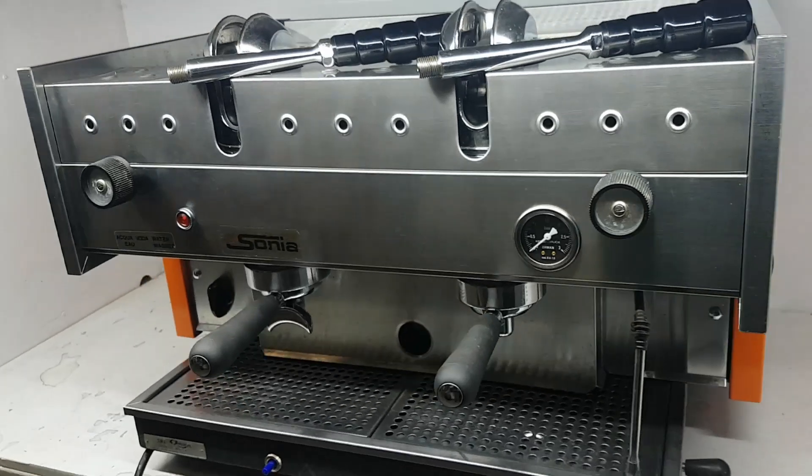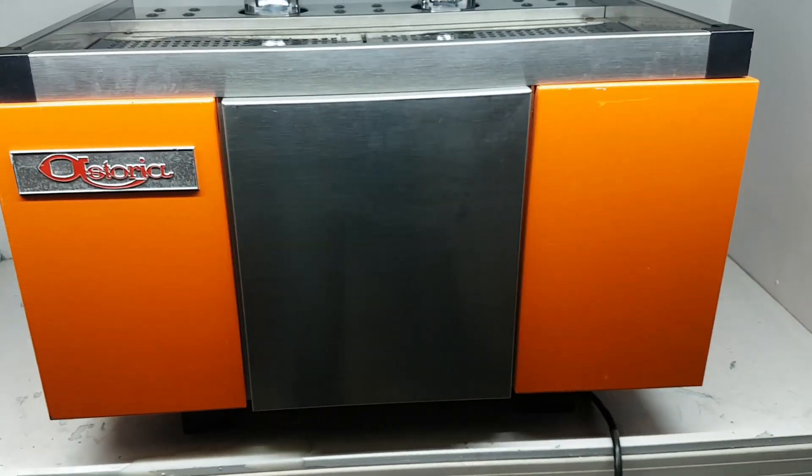Can you see these now? This is a 1983 Astoria Sonja lever machine. One of my first builds from 8 years ago. Looking back, not much I'd do differently.